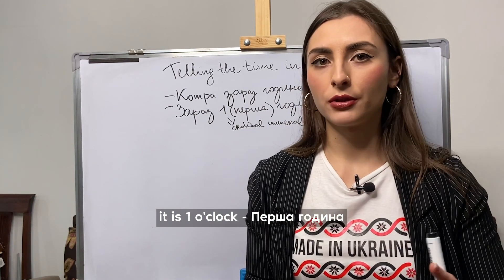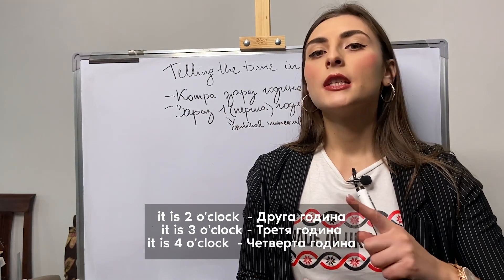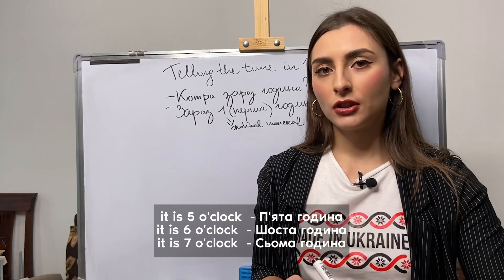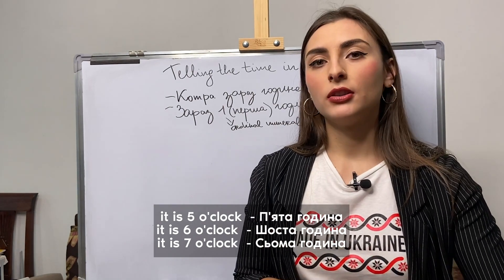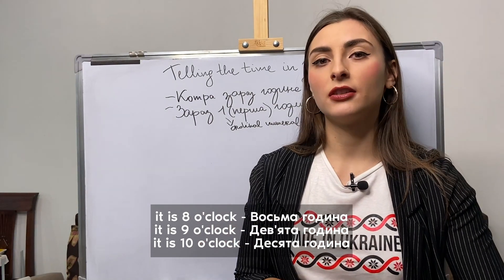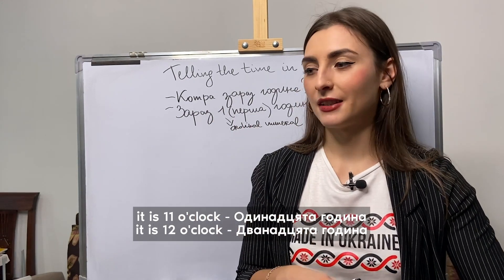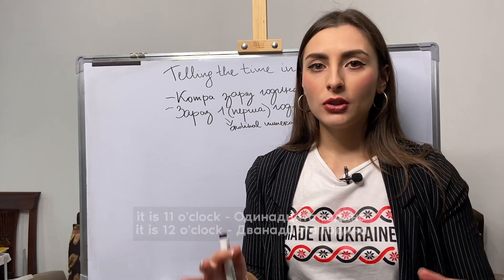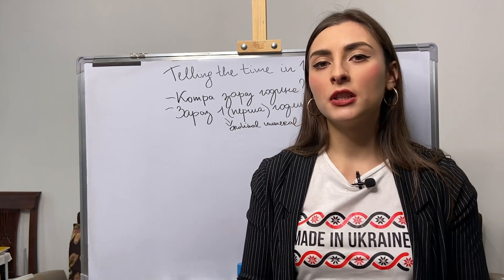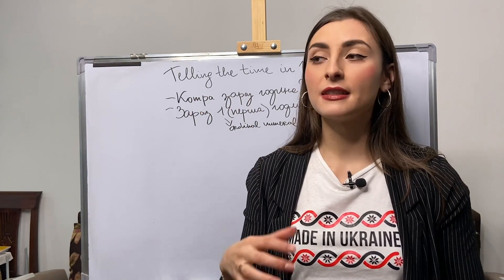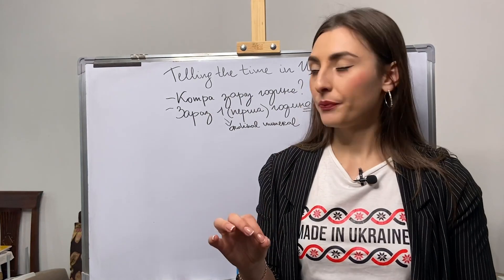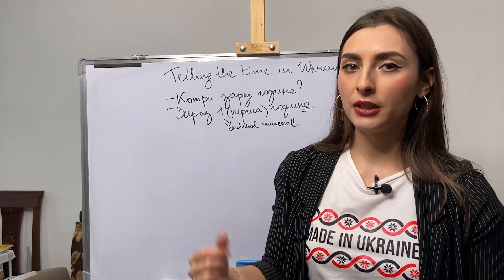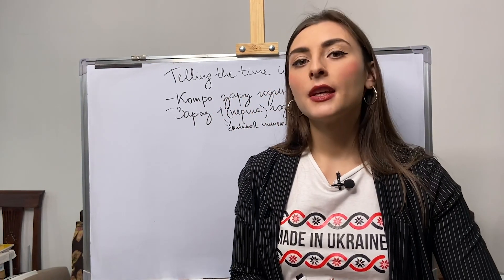Let's continue. How to say 2 p.m. or 2 a.m.: «друга година». «Третя година». «Четверта година». «П'ята година». «Шоста година». «Сьома година». «Восьма година». «Дев'ята година». «Десята година». «Одинадцята година». «Дванадцята година». So you always use in this construction the ordinal numeral in the nominative case in its basic singular form, in agreement with the word «година».